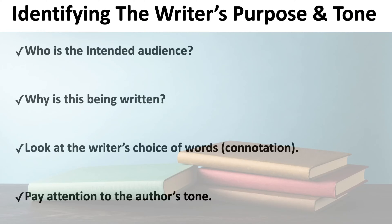Identifying the writer's purpose and tone. Two questions to keep in mind: Who is the intended audience? And why is this being written? You also want to look at the writer's choice of words and the author's tone. It's almost like reading a text message from someone who's angry — you know they're angry because of the choice of words they're using. When reading passages and asked to identify the writer's tone, pay attention to the choice of words and what they're trying to convey, how they're trying to make you feel. For identifying purpose, ask yourself: Who is this writer talking to, what group of people, and why is this author writing this passage?